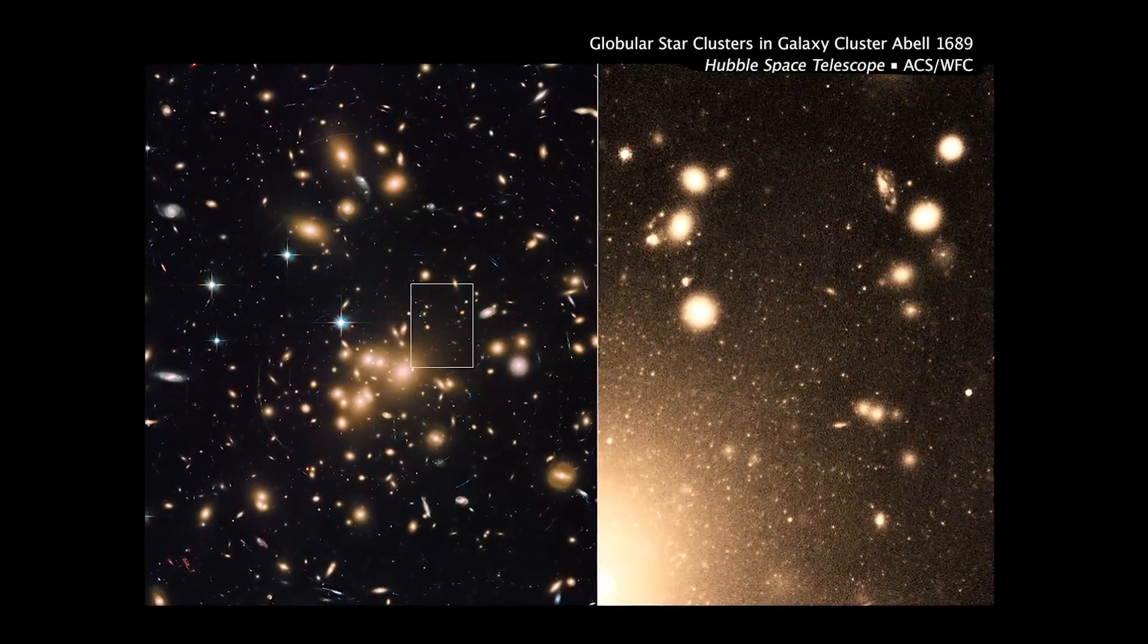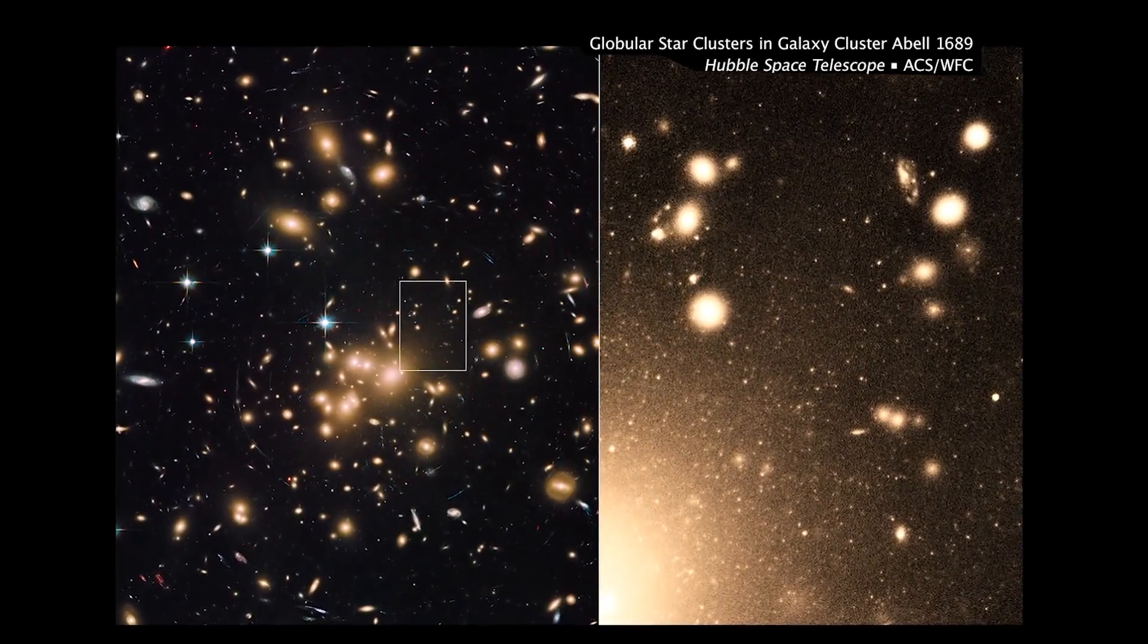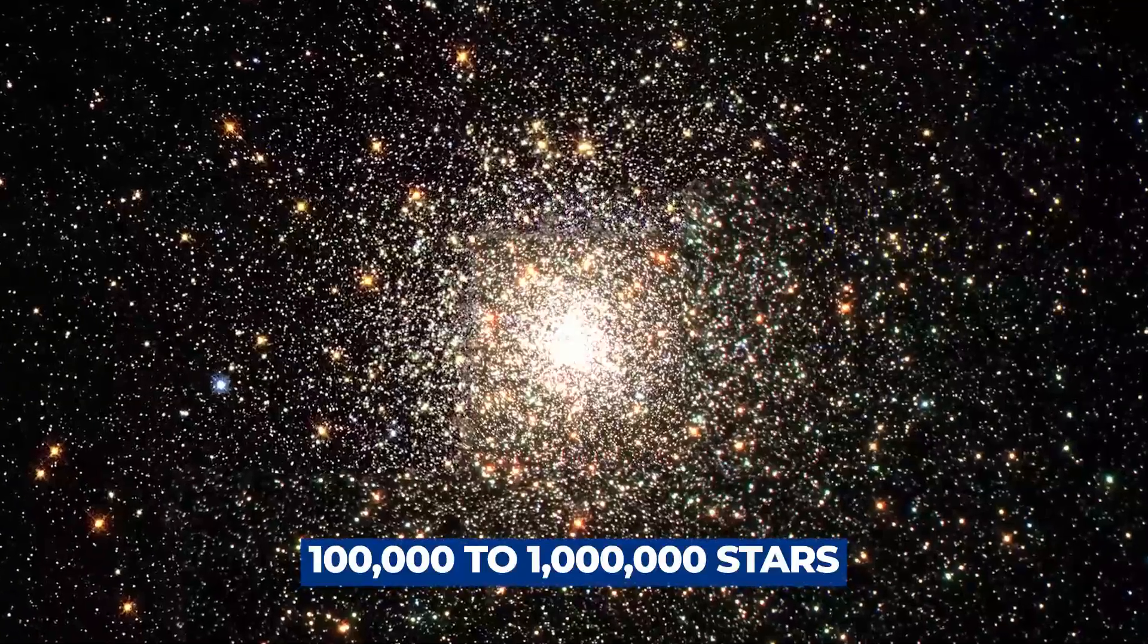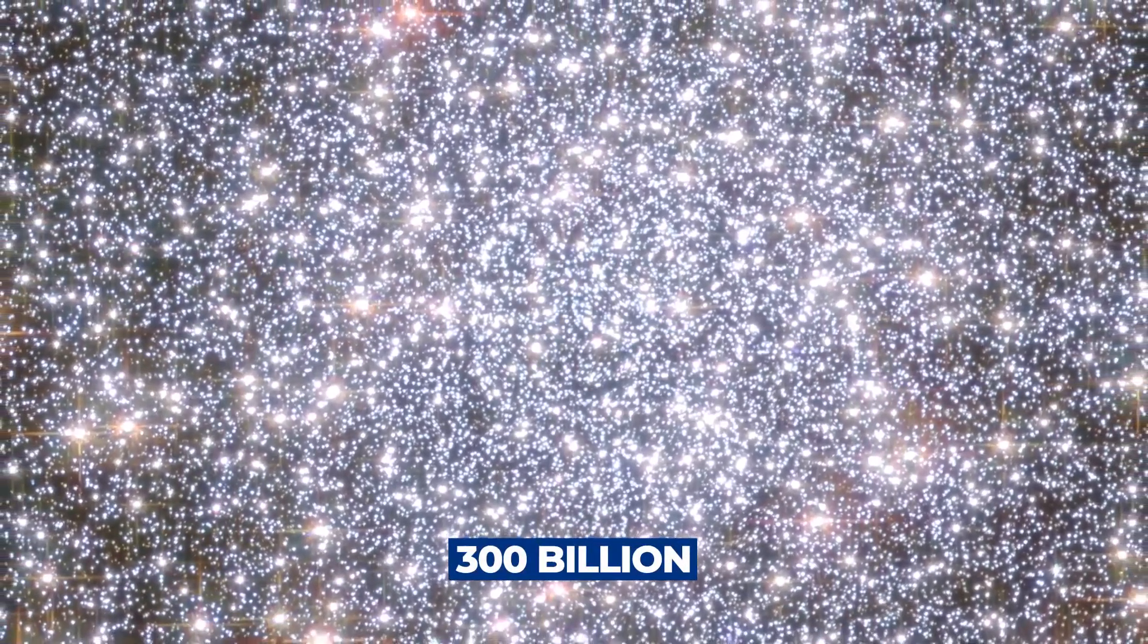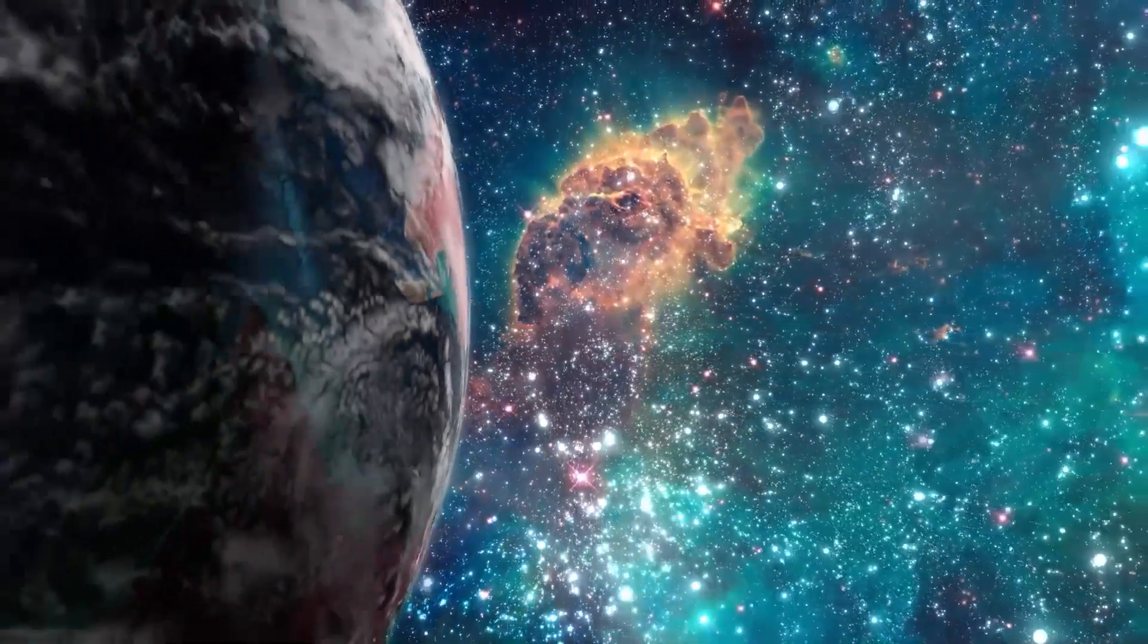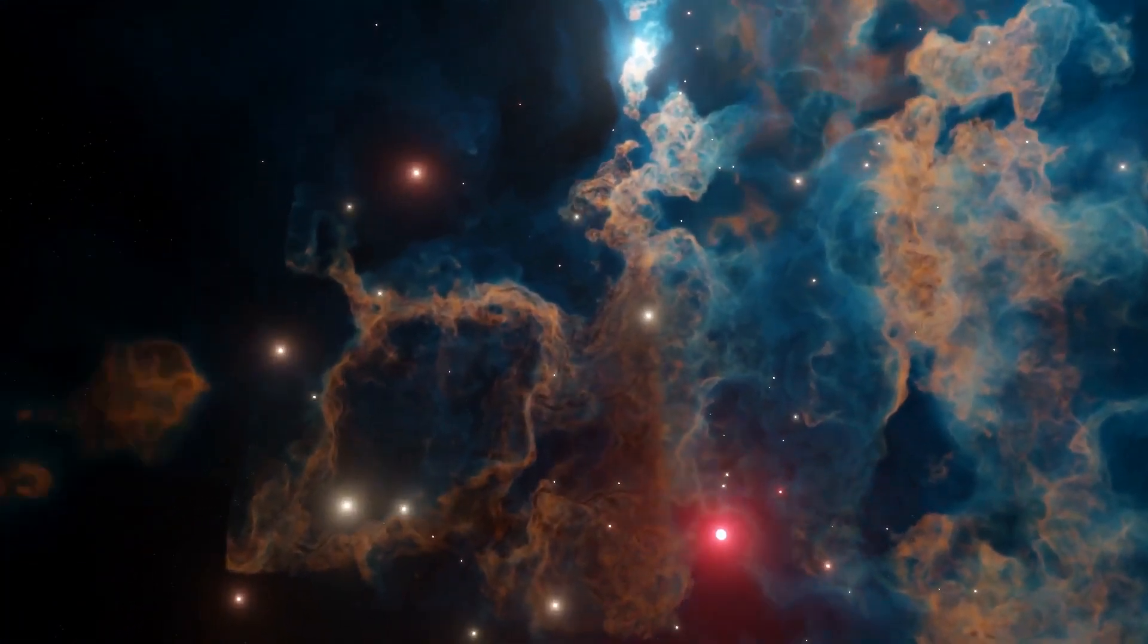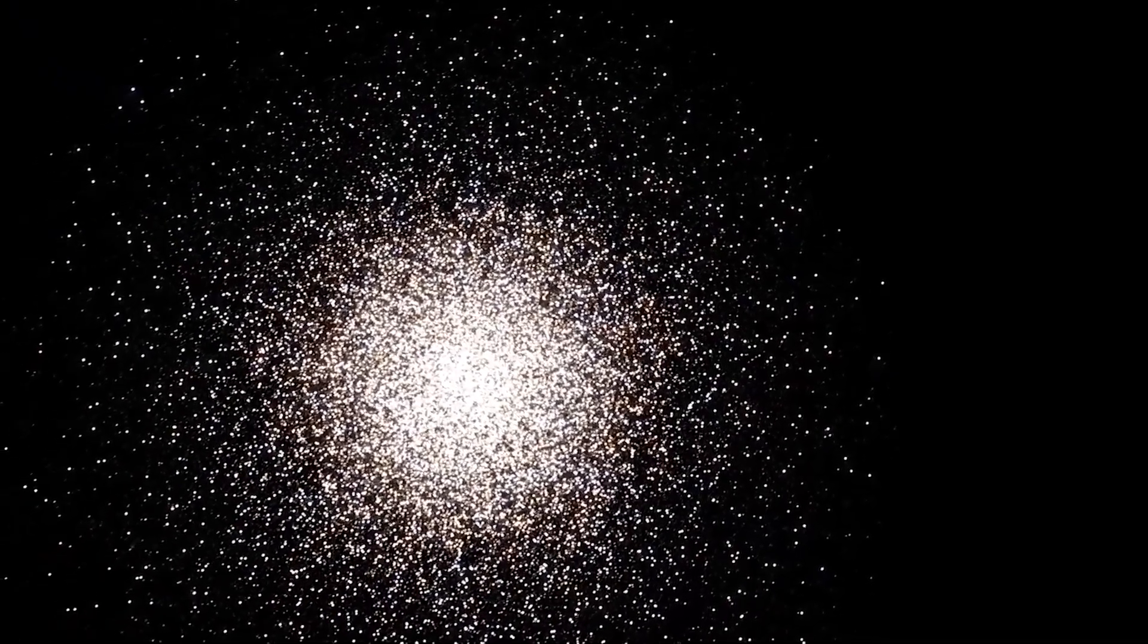A good-sized cluster will have 100,000 to 1 million stars, whereas a galaxy such as the Milky Way would have 300 billion. The cluster generally contains old stars. Since you see no emission nebula generating new stars, and the clusters are generally not in the galactic plane, but form a sort of spherical halo around the galaxy.